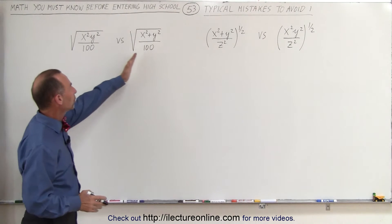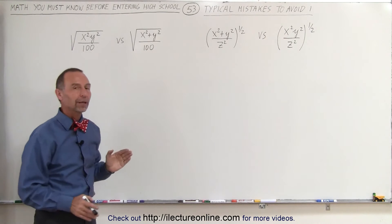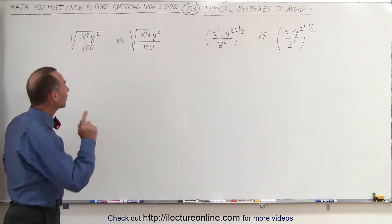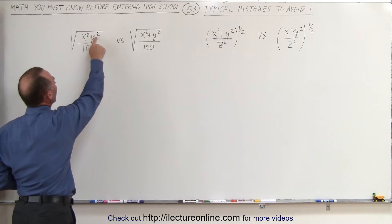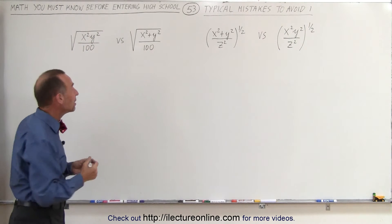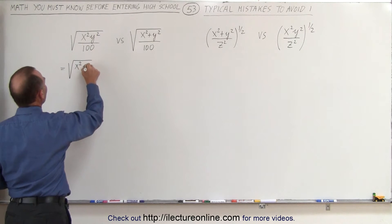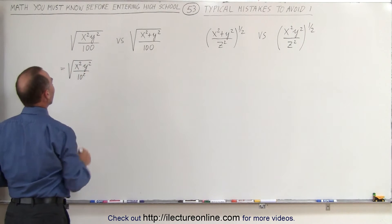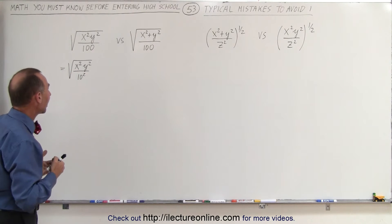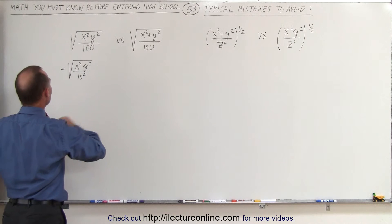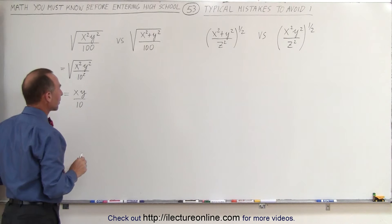For example, what is the difference between those two radicals? Can we take the square root of the left and can we take the square root of the right? On the left side, notice there's no plus or minus signs anywhere inside the radical — it's simply x squared times y squared divided by 100. Which means we can write this as the square root of x squared times y squared divided by 10 squared. Whenever you take the square root of anything squared, you can simply take it outside the radical sign. And since there's no plus or minuses, this can simply be written as x times y divided by 10.